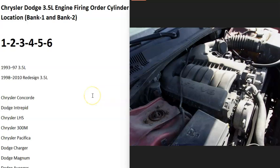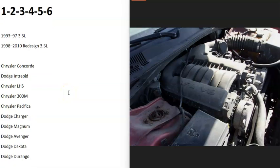Hello all. So if you have a Chrysler 3.5 liter engine and you need to know what the firing order is, the cylinder location, and which bank is bank one or bank two, I thought I'd real quickly go over this and explain what it is. This is going to include the 1993 to 1997 3.5 liter and the redesigned 3.5 liter from 1998 to 2010, covering several different cars and trucks.